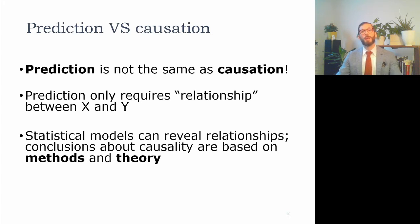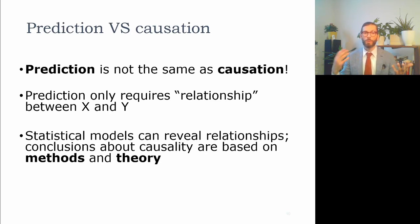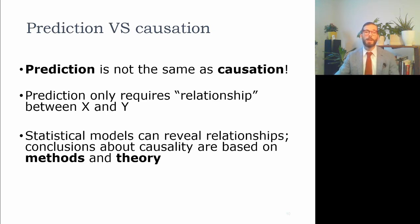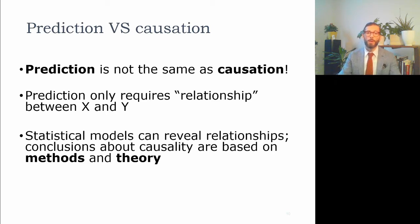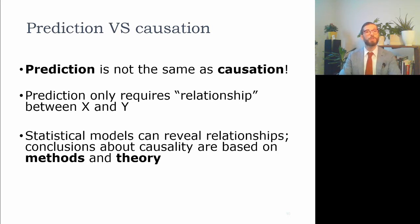Prediction is a little bit less stringent than causation. If we have a relationship between x and y, we can use x to predict values on y, and this only requires there to be a relationship between the two. For example, if we know there's a relationship between biological sex and shoe size, and someone has a shoe size of 43, we can predict that person is probably a man. Conversely, a shoe size of 36 predicts probably a woman. Prediction is not as stringent as causation.